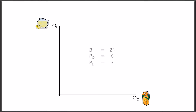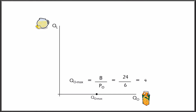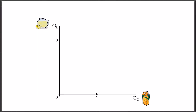The first thing we need to find is the maximum amount of orange juice this individual can acquire. We find it by taking the budget divided by the price of orange juice — the quantity consumed if the entire budget were spent on orange juice only. We do the same with lemonade to find the maximum amount if the entire budget was spent on lemonade only. Since prices are typically constant for one individual, we simply draw a straight line between these two points. This line is the CPC, and it shows all possible consumption combinations when spending the entire budget.